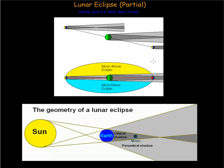The reason we don't get an eclipse every time we have a new moon or a full moon is because the moon's axis is tilted at about 5 degrees to ours. There's a place called the node. The moon moves around us in a counterclockwise direction. When it hits this node going down, we call this the descending node, and when it hits the far side going up, it's the ascending node.